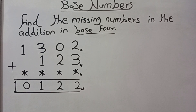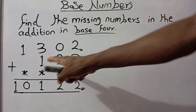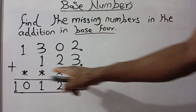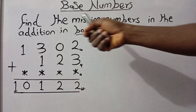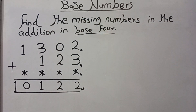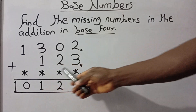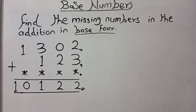Hello viewers, welcome to my channel. Today we shall be looking at yet another question on base numbers. This is the kind of question that most students find very difficult to solve — a situation where you are given an operation of addition in bases and certain digits are missing for us to find. In this particular question, you have 1302 base 4, plus 123 base 4, and you are provided with missing digits and asked to find them. The question reads: find the missing numbers in the addition in base 4, where 1302 base 4 plus 123 base 4 plus a number with missing digits gives 10122 base 4.